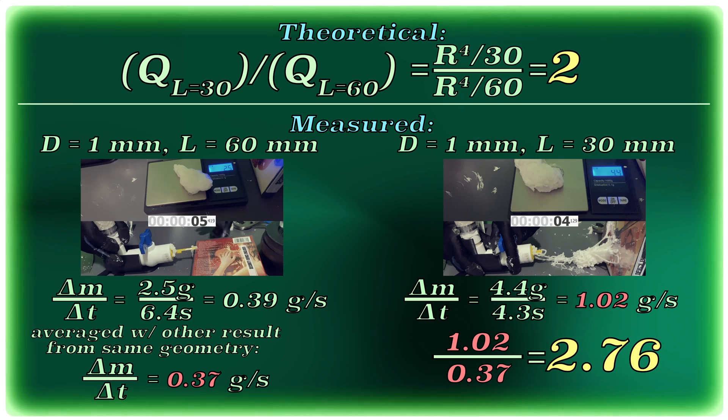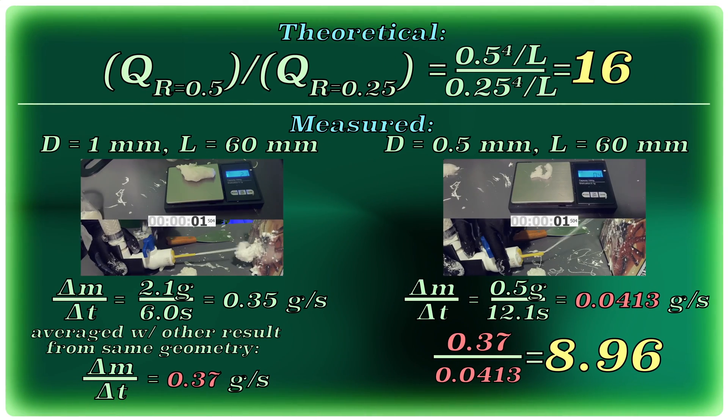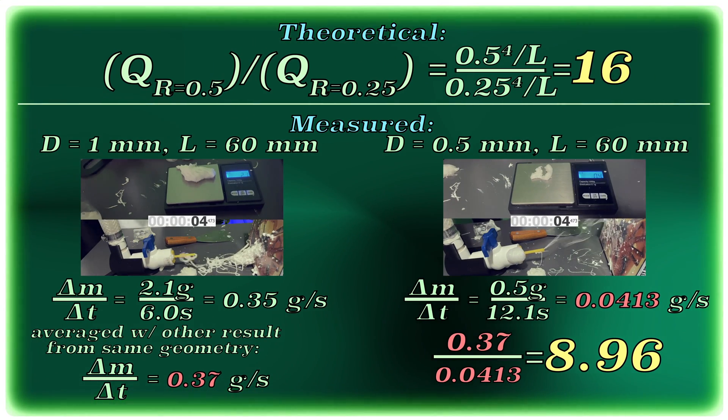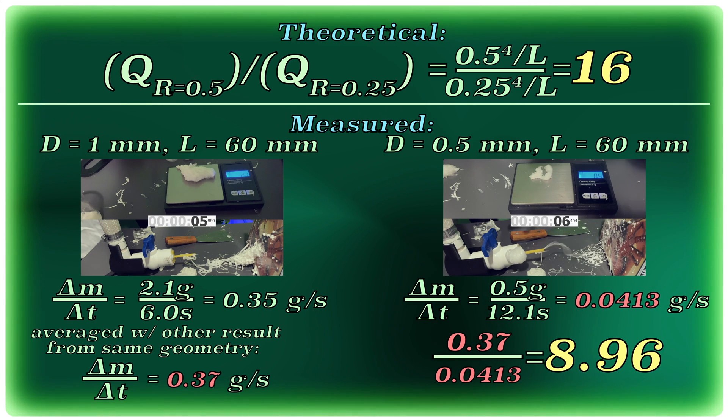Between two tubes of the same length, but where one of the diameters is half the other, the law states that the wider tube should have 16 times the flow rate, and I measured a ratio of 8.96.